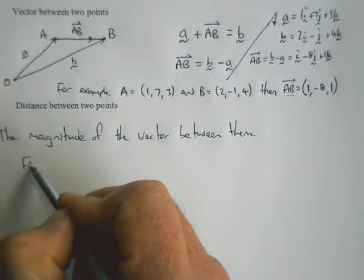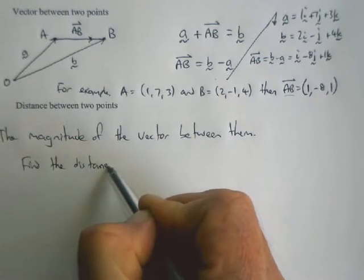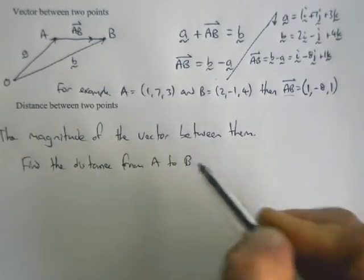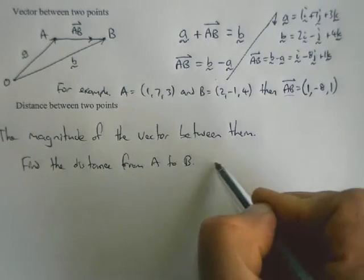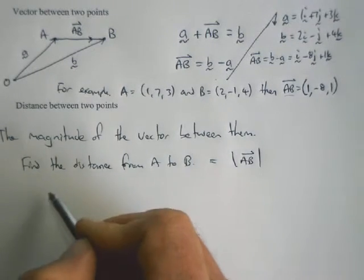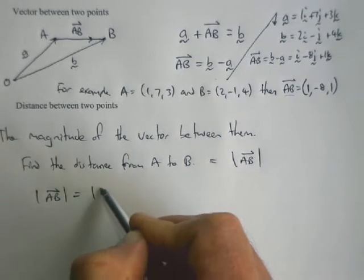If we take our example of A and B above and try to find the distance from A to B, then all we need to know is it will equal the magnitude of the vector between them.